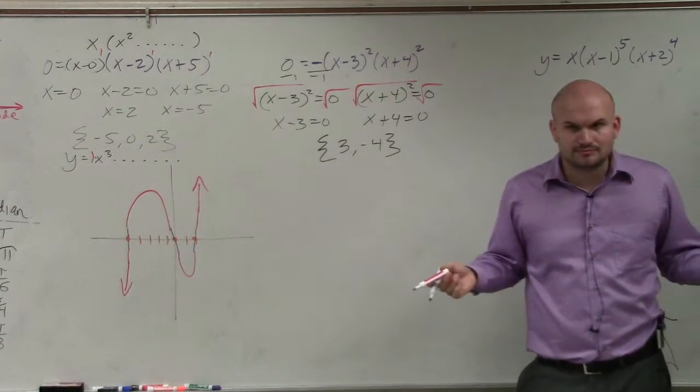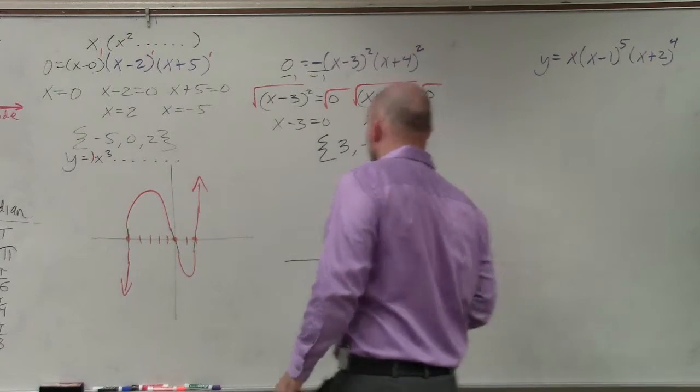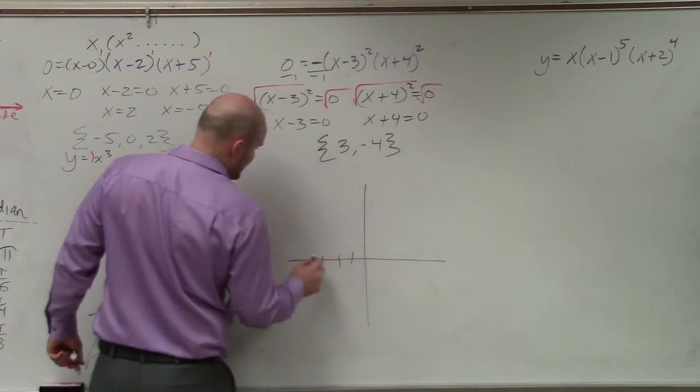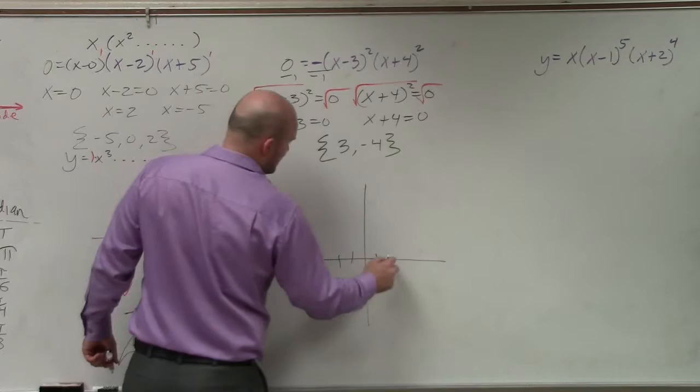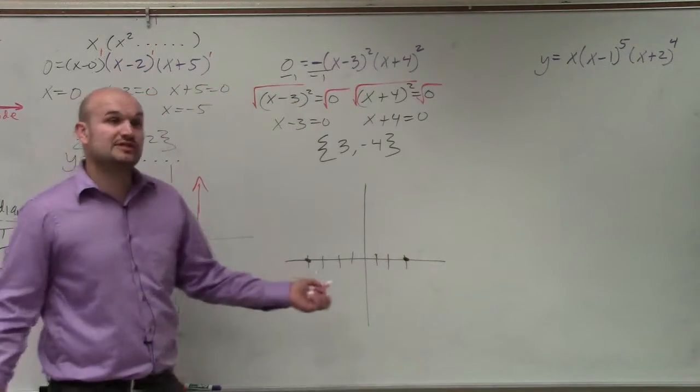Does everybody agree with me on that? Yes? OK. So I go to negative 4. 1, 2, 3, 4. Positive 3. 1, 2, 3. OK, so those are my two zeros.